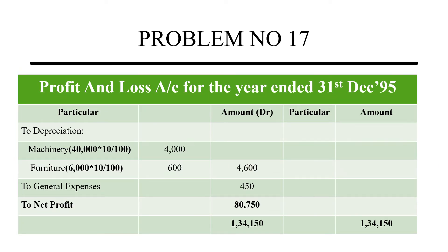On the debit side, depreciation: machinery is worth Rs. 40,000, so 10% depreciation is Rs. 4,000, leaving a net value of Rs. 36,000. Furniture is worth Rs. 6,000, so depreciation is Rs. 600, leaving Rs. 5,400. Total depreciation charged is Rs. 4,600. General expenses are Rs. 450. The credit side total is Rs. 1,34,150. After all debit entries, the balancing figure is Rs. 80,750, which is the net profit.